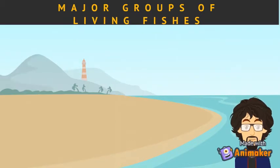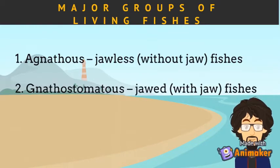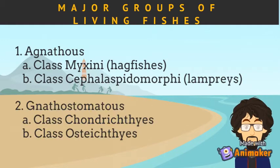There are two categories of living fishes: the Agnatha, or jawless fishes, and the Gnathostomata, or jawed fishes. Agnatha includes Class Mixini or hagfishes, and Class Cephalaspidomorphy or lampreys. On the other hand, Gnathostomata includes Class Chondrichthyes or elasmobranchs, and Osteichthyes or bony fishes.